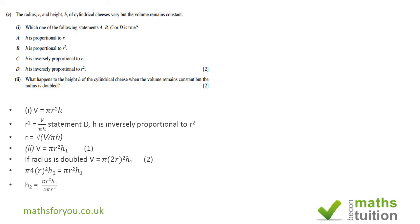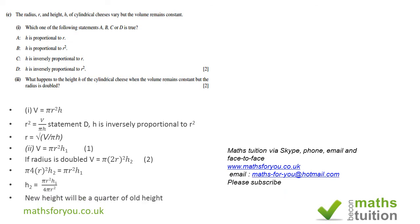If we divide both sides by 4πr², the πr² terms cancel, which means that h₂, the new height, is a quarter of the old height, and that should be the answer.